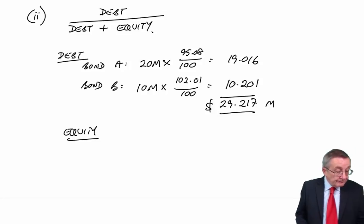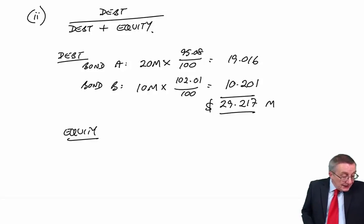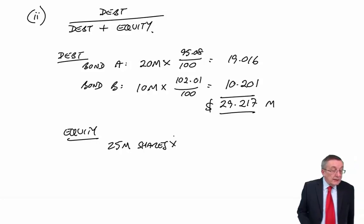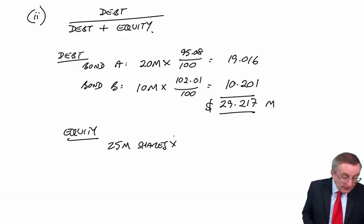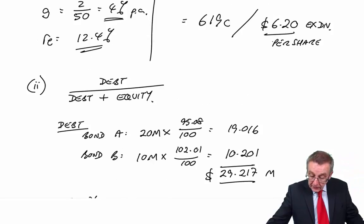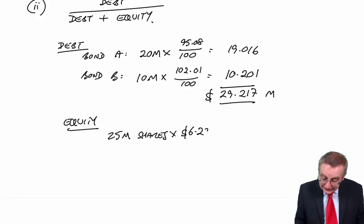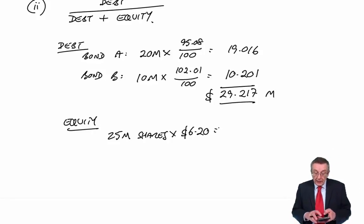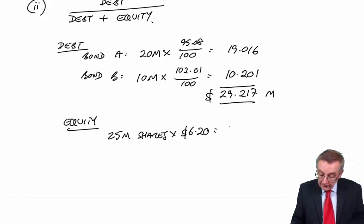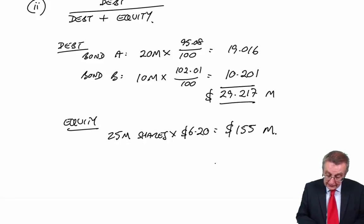Therefore, the total market value is 10.201. So, the total market value of debt is 29.217 million. What about equity? From the statement, the share capital is 25 million. Dollar shares, so we've got 25 million shares. The market value per share, of course, we're not told, but we did work it out in part one. The market value per share is $6.20. Total market value, $155 million.